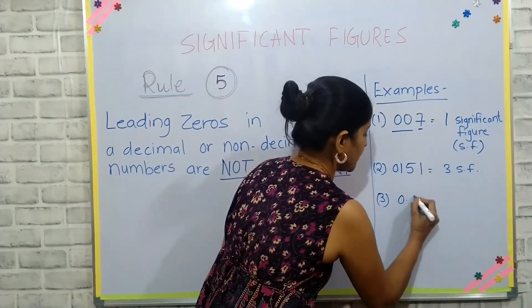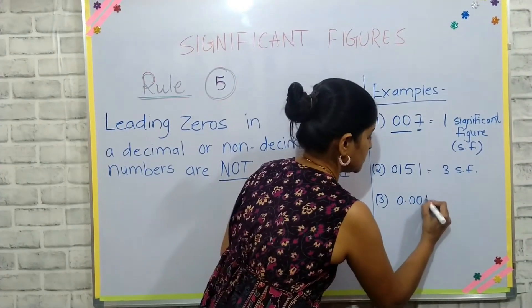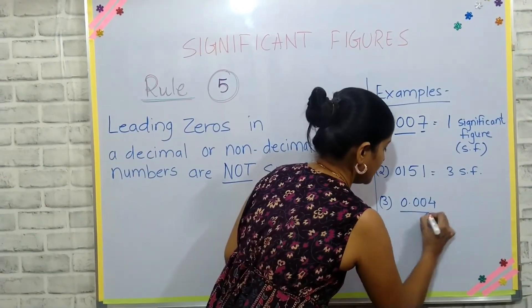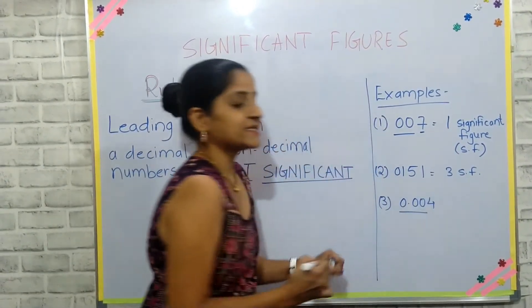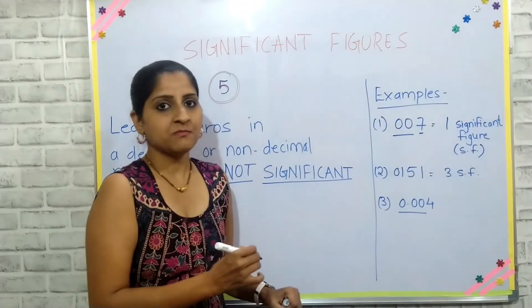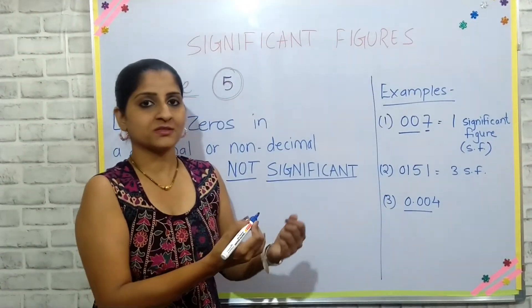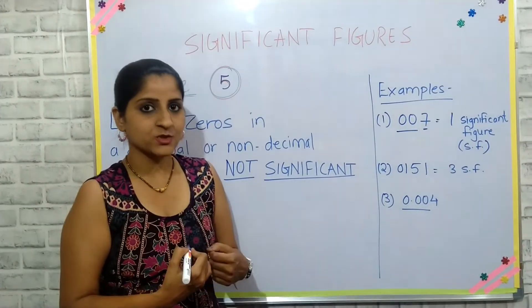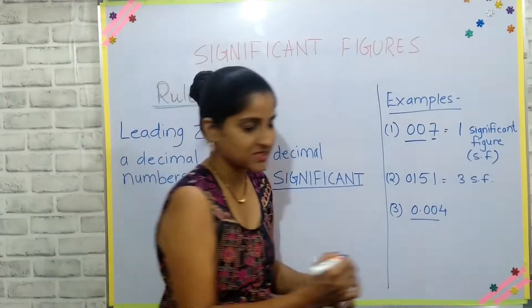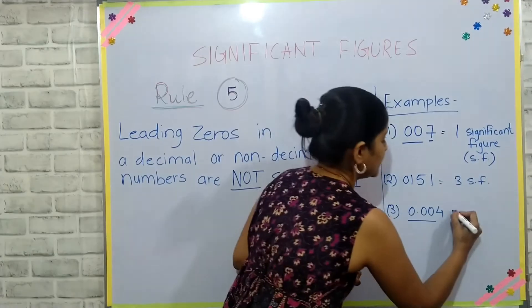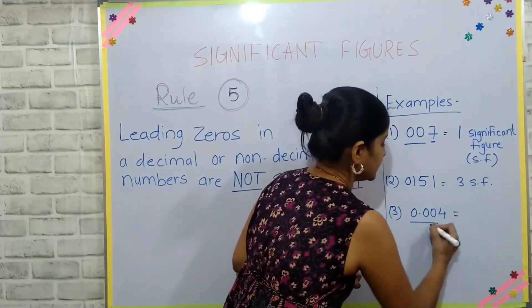If I write the number 0.004, this has three zeros which are all leading zeros, and again they will be considered not significant figures.